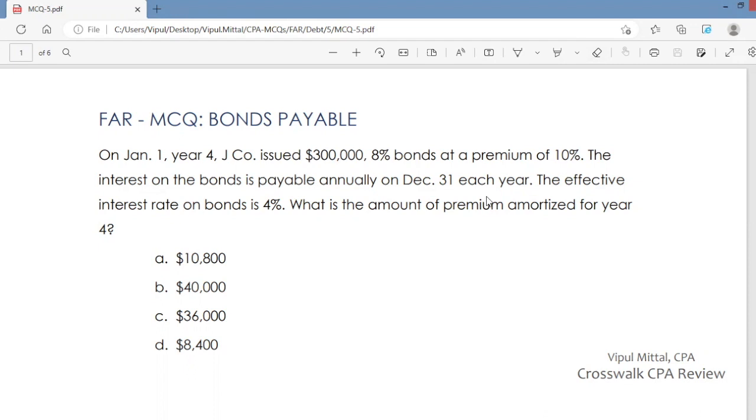Now, how do you calculate the amount of premium amortized? It is the difference between nominal interest.